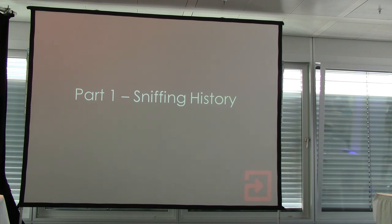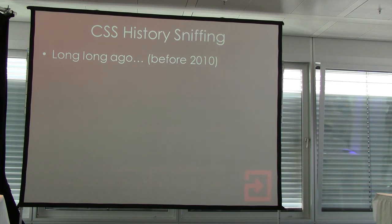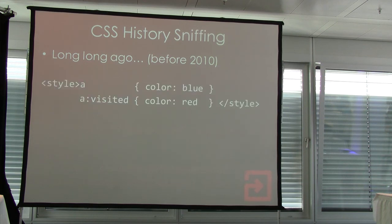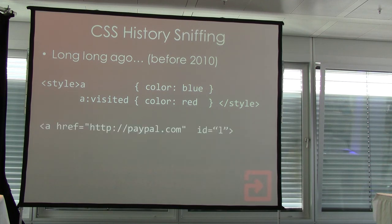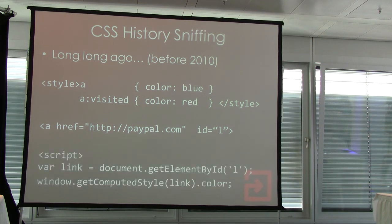Now I'm going to talk about history sniffing. Many, many years ago, CSS history sniffing was something every browser was vulnerable to before 2010, and it was a very simple attack. Here's some CSS that says draw links that are not visited as blue and links that are visited as red. A malicious website trying to sniff your history would put a link on the page pointing to, say, PayPal. It would then use JavaScript to get a reference to the link and call the function GetComputedStyle.